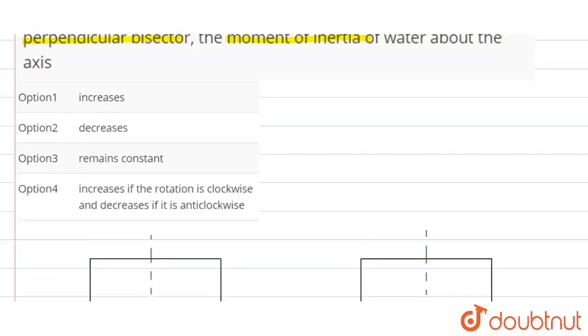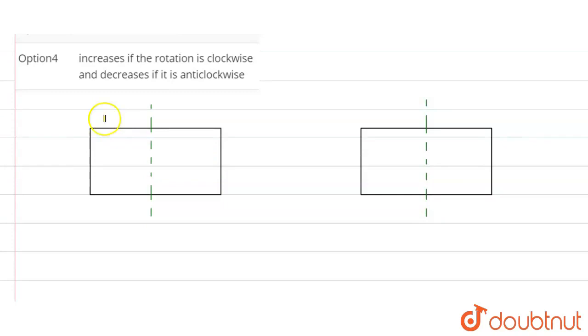So let's say we have a tube like this in the horizontal plane and it has some water not filled to the top. Now if this tube is rotated about the perpendicular bisector, this is the axis.